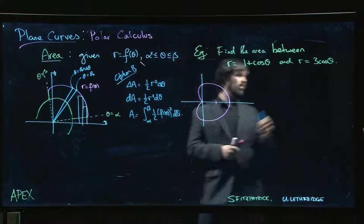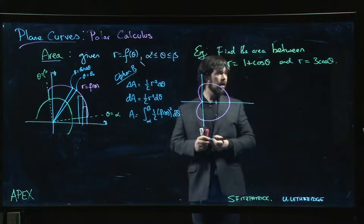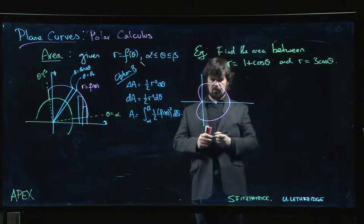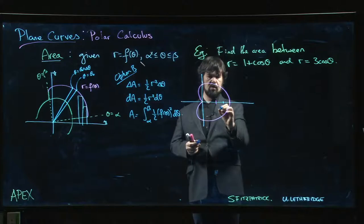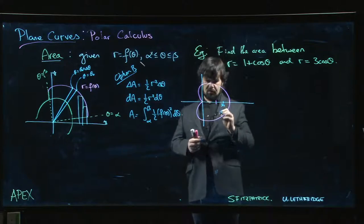The second curve is, again, a circle. This time it's a circle of radius three, but it's centered at three over two. So that's at three over two.